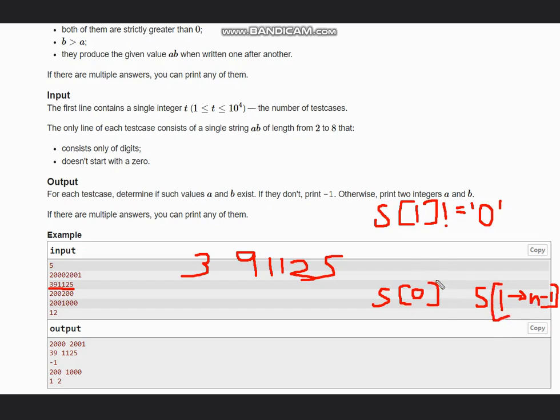This will be our answer for this case. But if this case is not true, which means we have zeros after this, we will run a loop. Initialize i equal to 1, and while i is less than the size of the string and we have the string as zero, we will increment i.